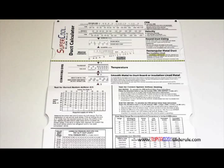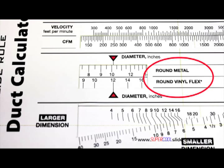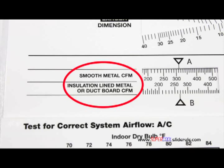Inside is packed with even more information. It performs sizing of both metal and flexible duct. It has the only direct reading conversion from smooth metal to insulation lined metal we've ever seen.